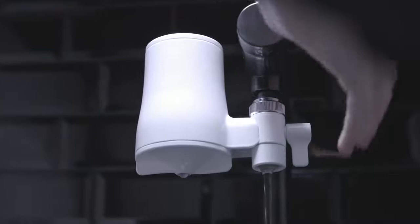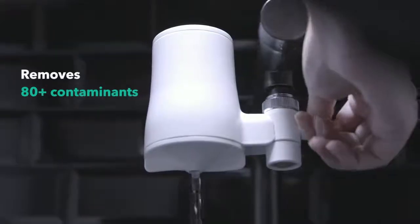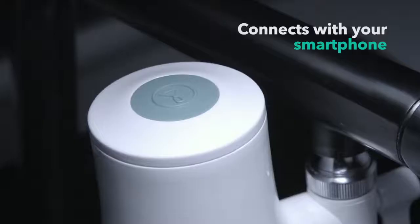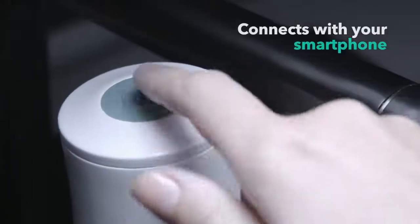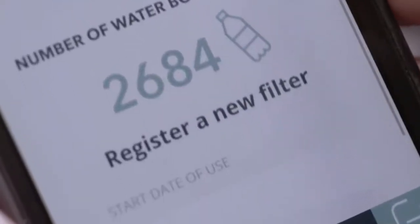Tap 2 uses the latest carbon block technology made of 100% coconut shells which removes over 80 contaminants including chlorine, pesticides and heavy metals while letting the good minerals remain. It connects with your phone to give you updates on when the cartridges need to be changed and how much money you've saved and the environmental impact.